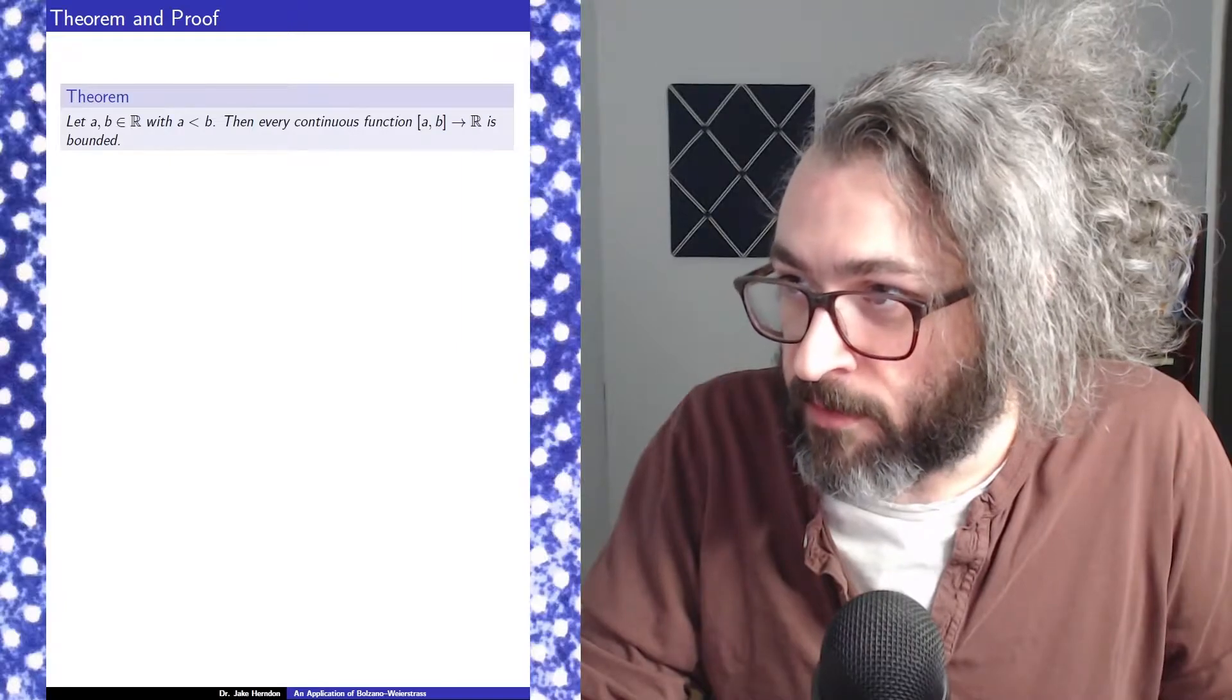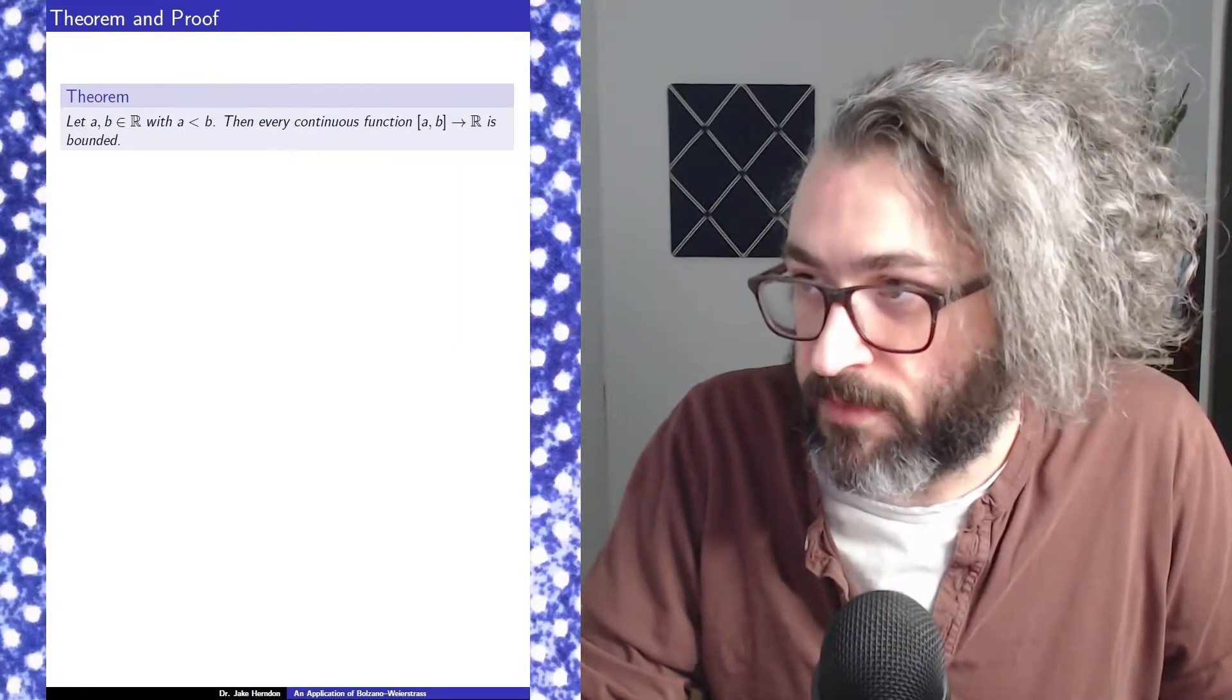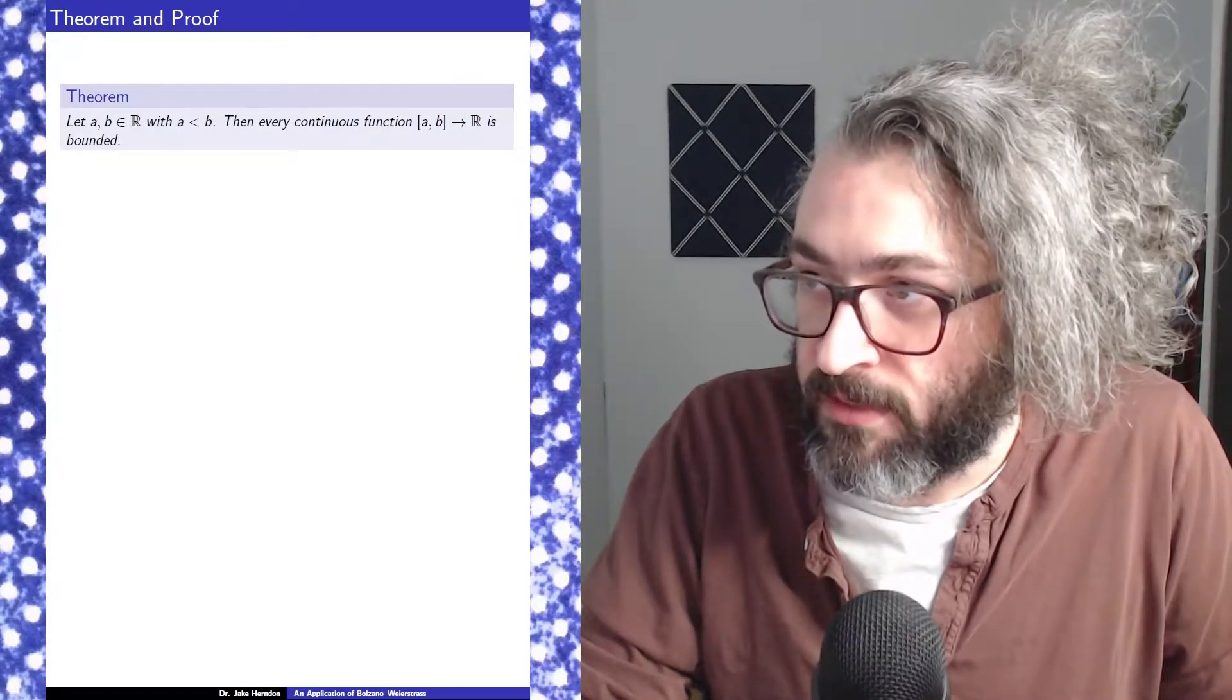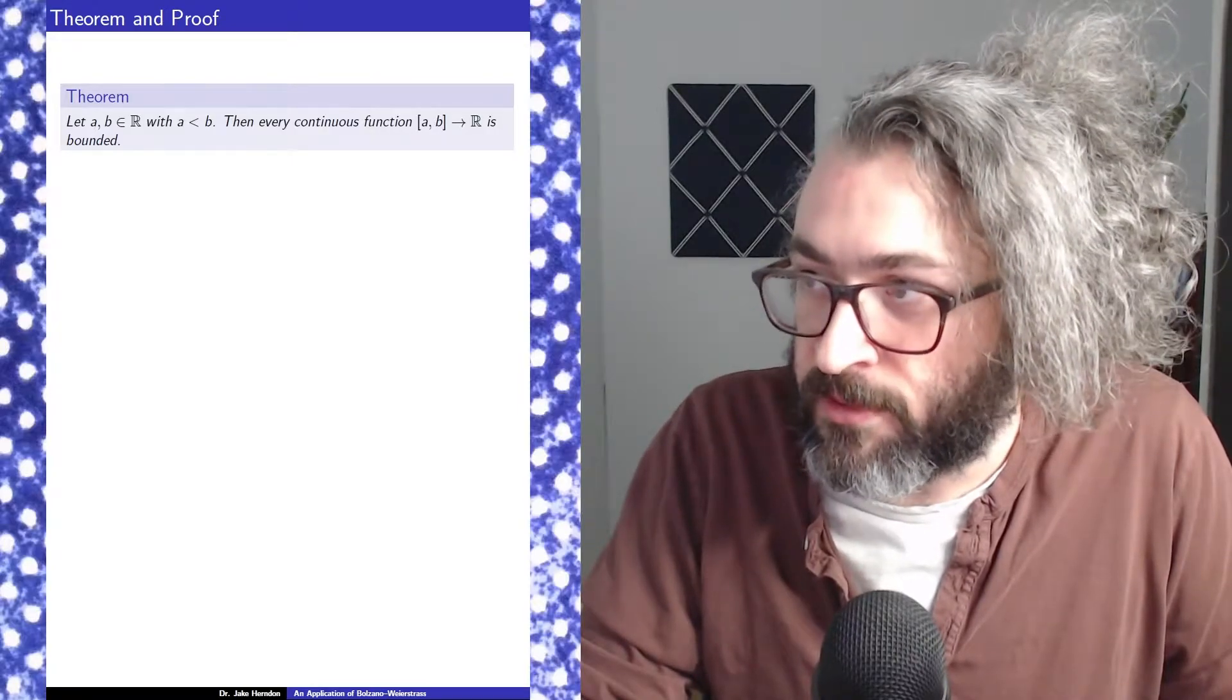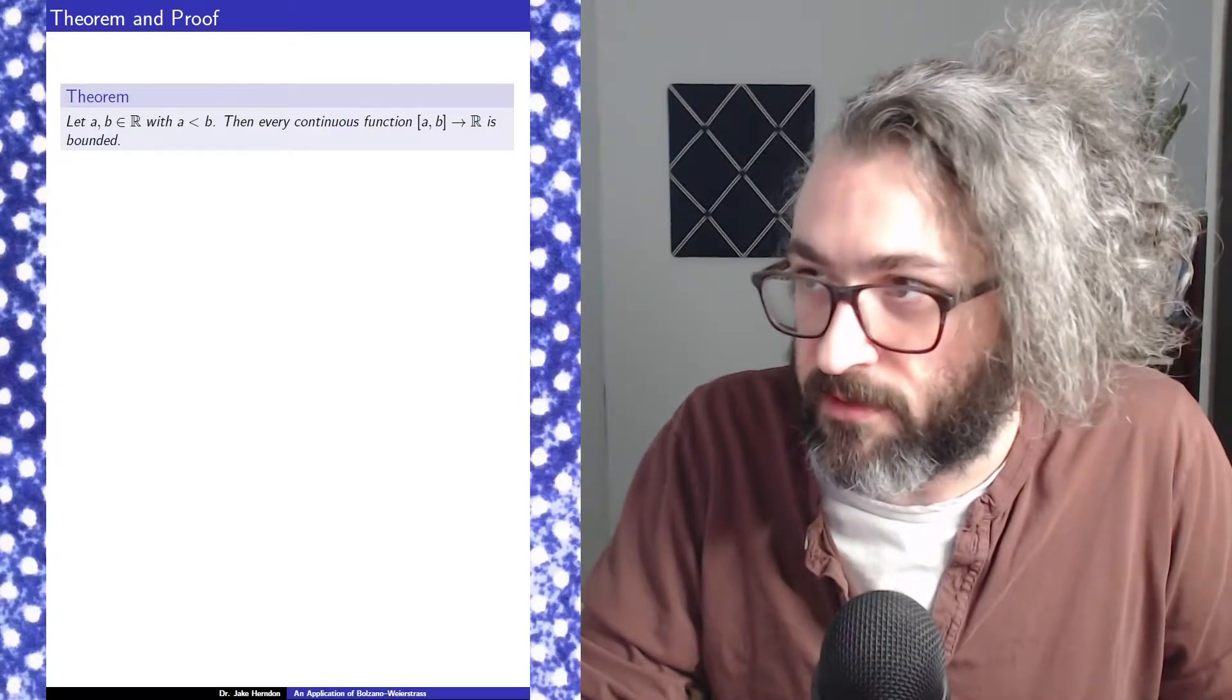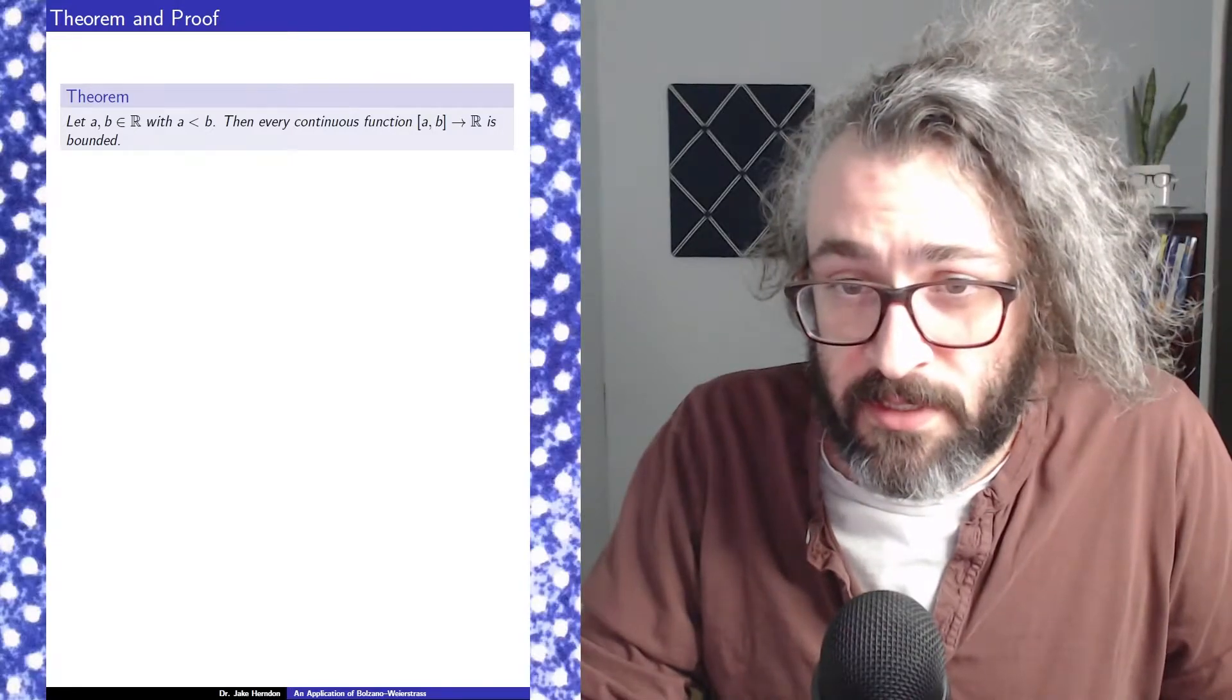So here's the theorem once again. Let a and b be real numbers with a smaller than b. And every continuous function on the closed interval from a to b is bounded. And the proof goes like this.